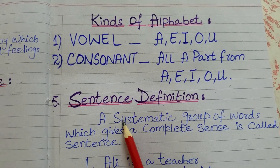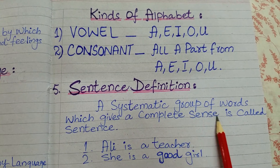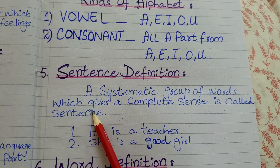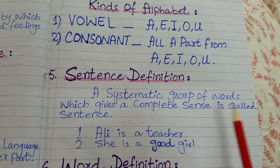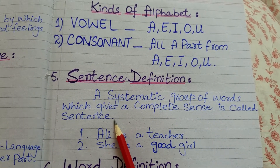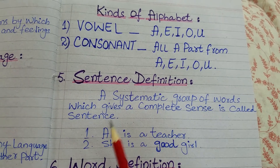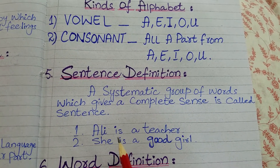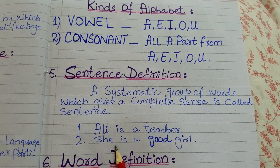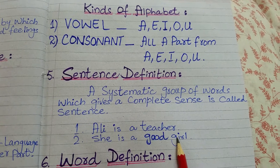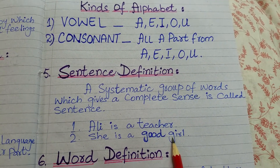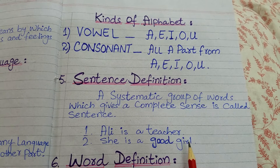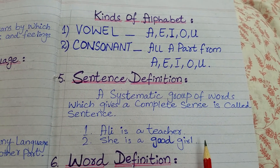Next definition: sentence definition. A systematic group of words which gives a complete sense is called a sentence. Mukhtalif alfaz ke majmue ka naam jumla hai. For example: 'Ali is a teacher' — complete sense de raha hai, to yeh sentence ban gaya. She is a good girl. I write a letter. This is my book. Jazz is a good boy — all give a complete sense, so they are called sentences.